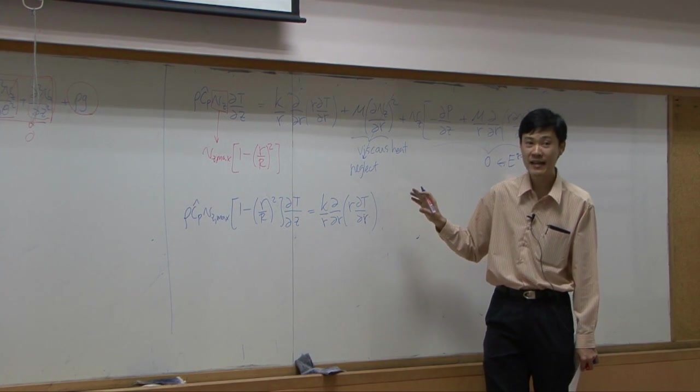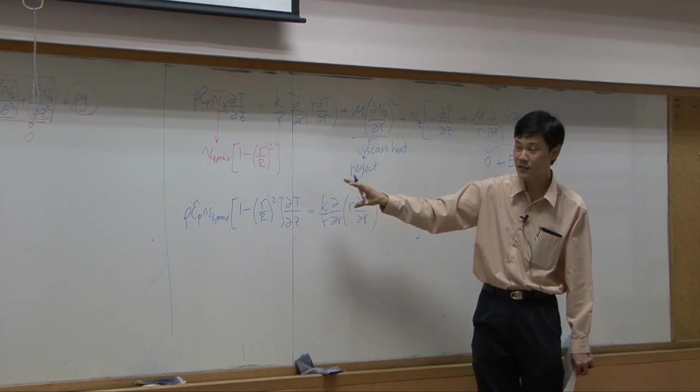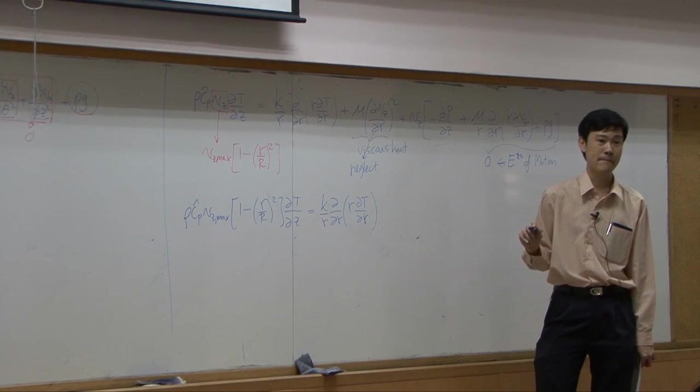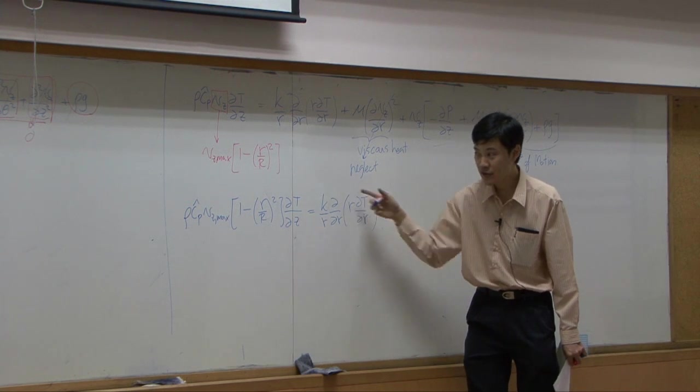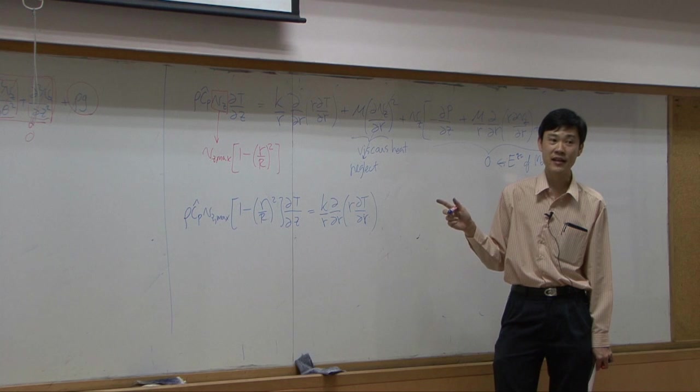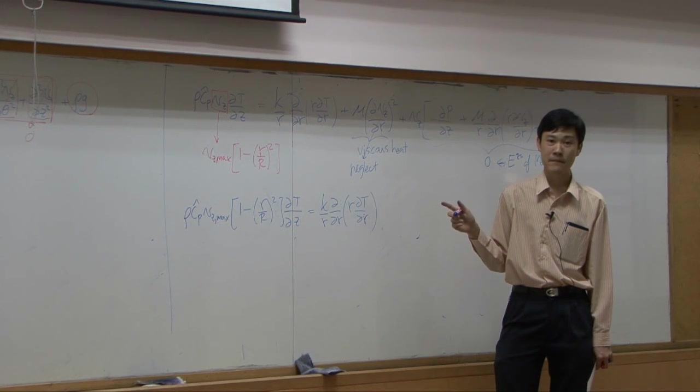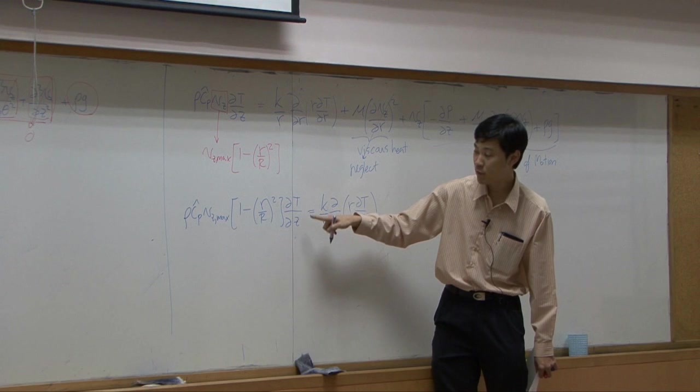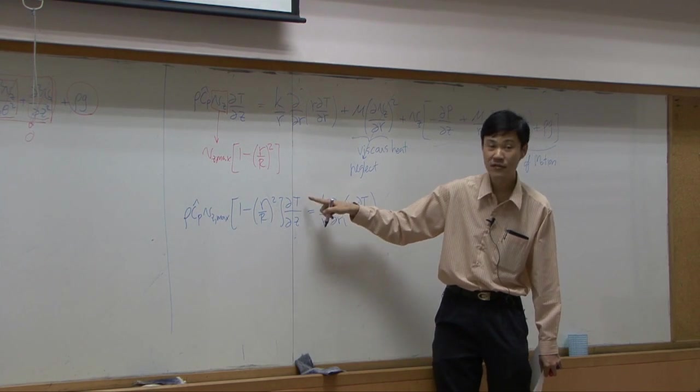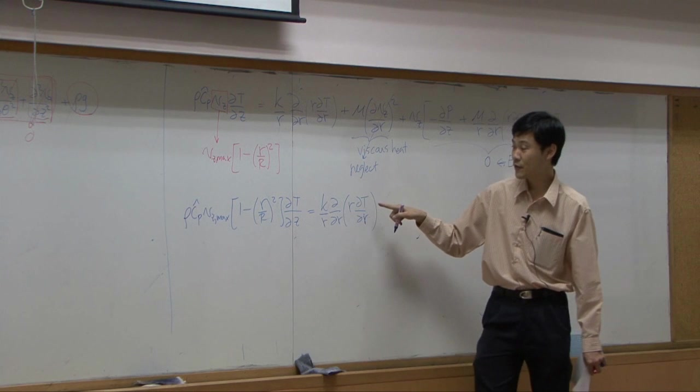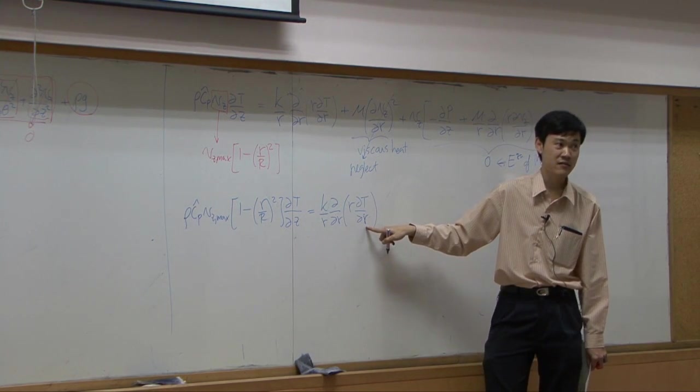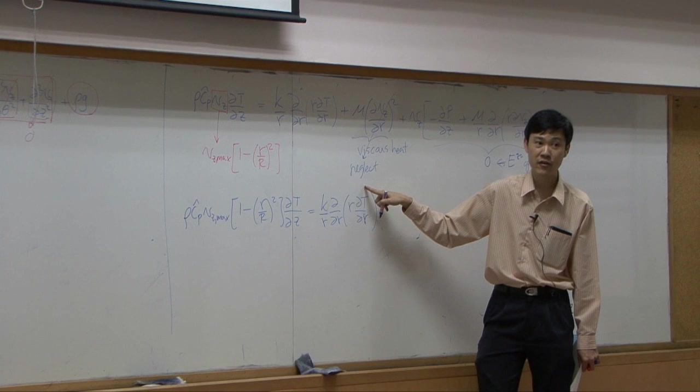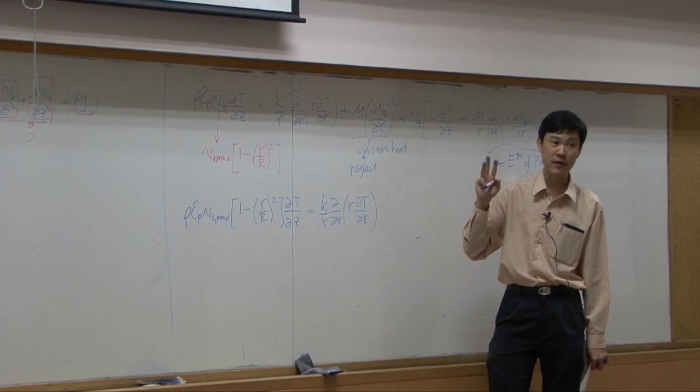How many boundary conditions are needed for this equation to be solved? According to the form of equation here, how many boundary conditions are needed? You have one differentiation with respect to z. If you integrate it, you need one. You have second order differentiation with respect to r. In order to integrate this, you need to integrate it twice. So two more boundary conditions with respect to r.